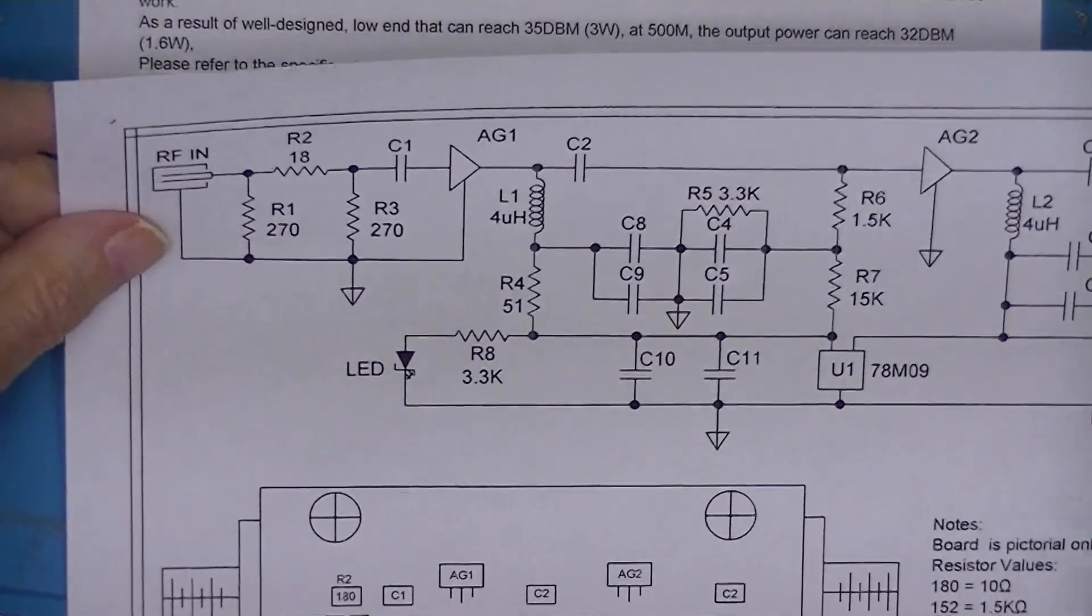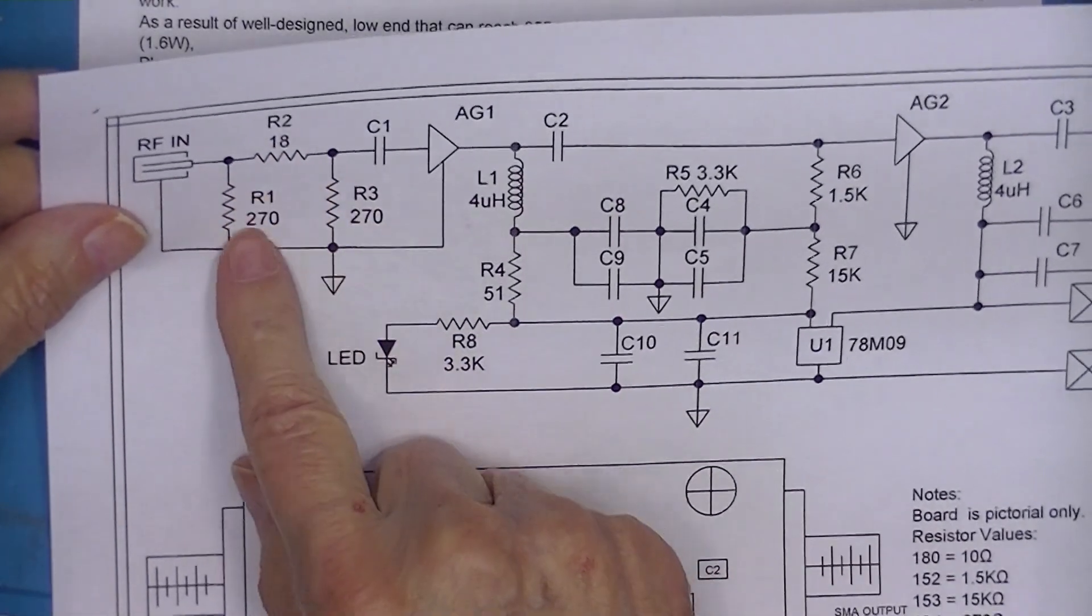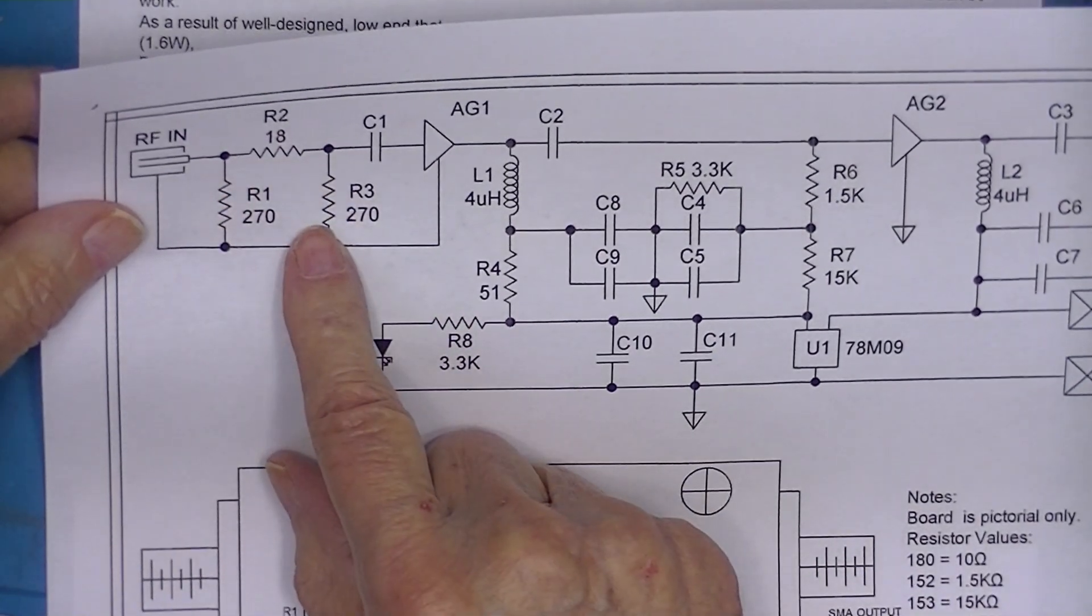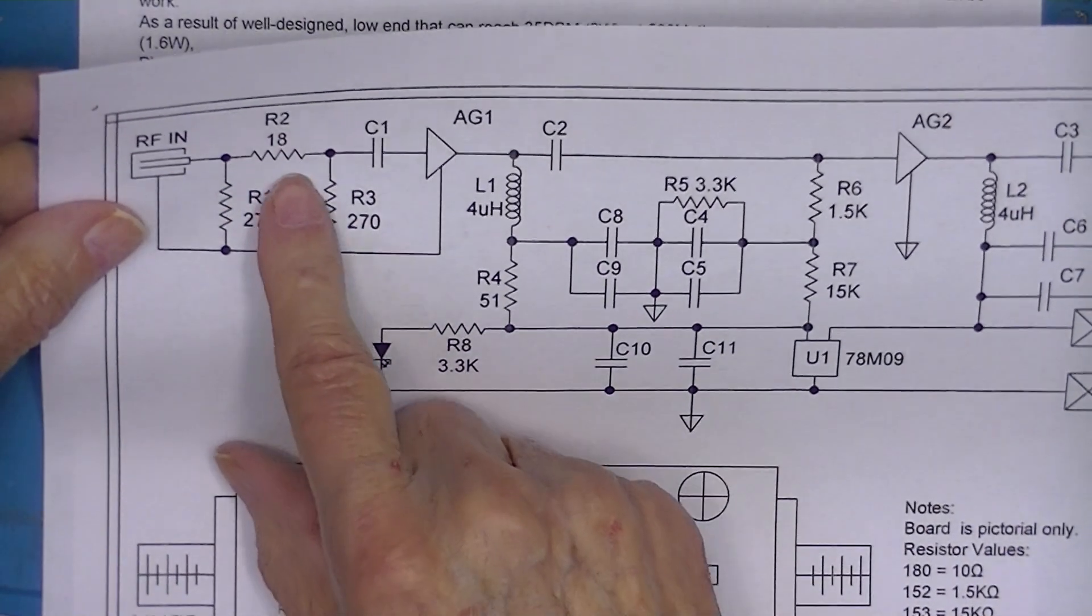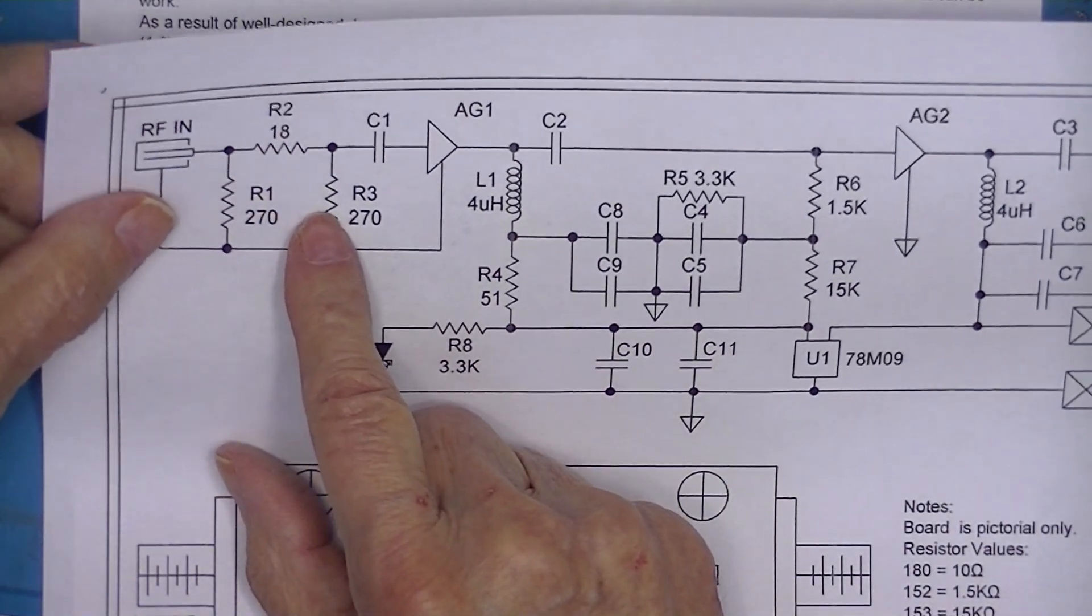Schematic is fairly simple. This is a 3 dB pad, 3 dB attenuator. Actually as close to 3 dB as off-the-shelf components allow you at 50 ohms.